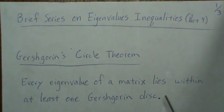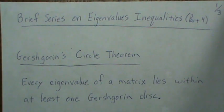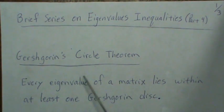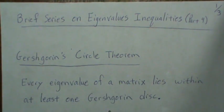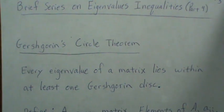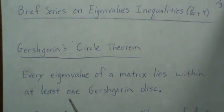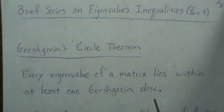Hey, this is part four of a brief series on eigenvalue inequalities, and this one deals with a pretty fascinating theorem, one of the early ones: Gershgorin's circle theorem. Briefly, the theorem says every eigenvalue of a matrix lies within at least one Gershgorin disk.